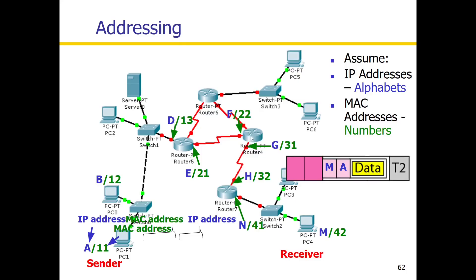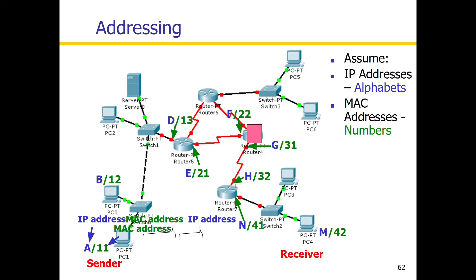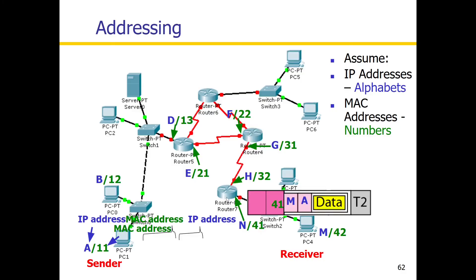Likewise, the source and destination IP address doesn't change, but the MAC address source and destination will change. So the source is now 21 because we are on this port. For the next hop, source is 31 and destination is 32. Finally, at the last hop, the receiver is reached. The source MAC address becomes 41 because the port is 41, and we check the receiver's MAC address which is 42. This is the destination.